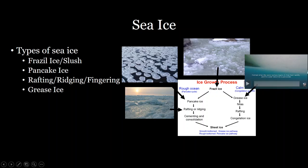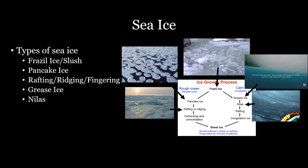As that grease ice develops even more, you can start to get what's called nilas — larger, delicate strips of ice that develop in calm oceans. You can see people in the image for scale to show what these nilas look like.